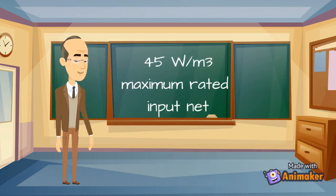For a space heater in a room the maximum appliance rated input net is 45 watts per meter cubed. This means for every cubic meter of the room size a maximum of 45 watts input can be used.